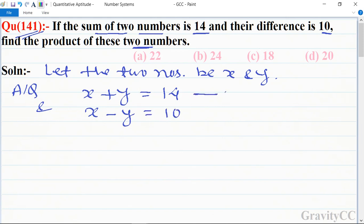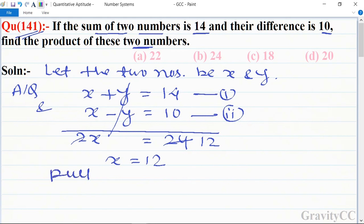Suppose this one is the first equation and this one is the second. After adding we get 2x equals 24, so x equals 12. Putting x equals 12 in equation first, we get...